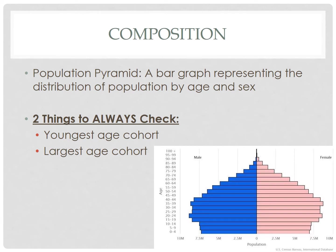Hello Human Geographers, we are back at it again this evening. Tonight we are going to use a tool to study population composition called a population pyramid. A population pyramid is a bar graph representing the distribution of population by age and sex — a snapshot of a population's age and sex structure.